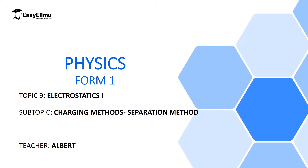We also discussed how to charge a material using induction method. In induction method, if you want it positively charged you use a negatively charged rod, and if you want it negatively charged then you use a positively charged rod. In those two methods you charge materials separately. Now in this lesson we are going to see how to charge materials at once, and we are going to use a method called the separation method. My name is Albert.